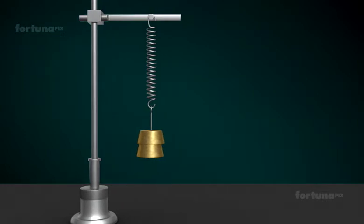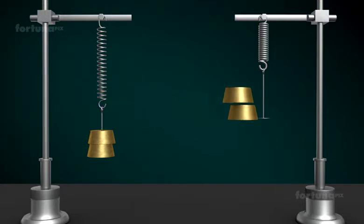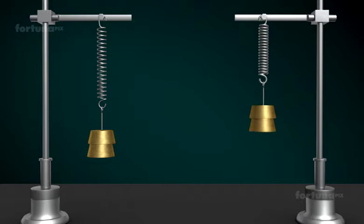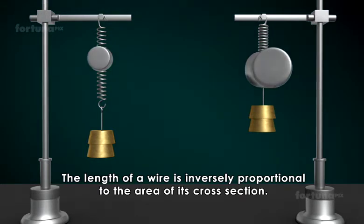Now, let's use another spring made of a thicker wire and hang it alongside the first spring. Once again, two kilogram weights will be suspended from the spring. Notice that the thicker spring will stretch less. From what we've seen, we can infer that for a given weight, the length of wire is inversely proportional to the area of its cross section.